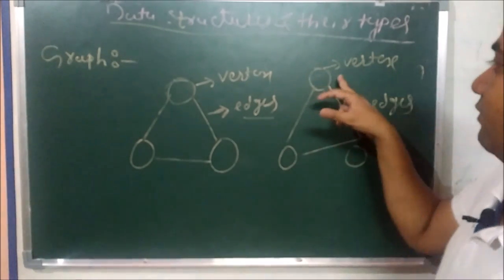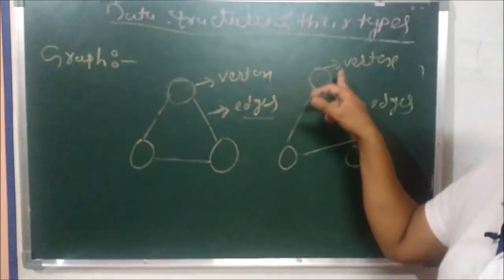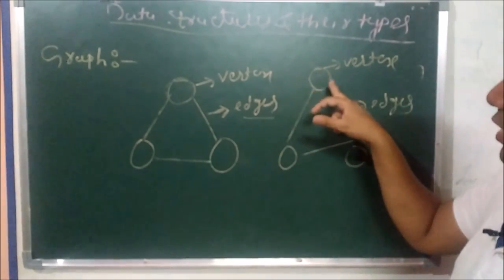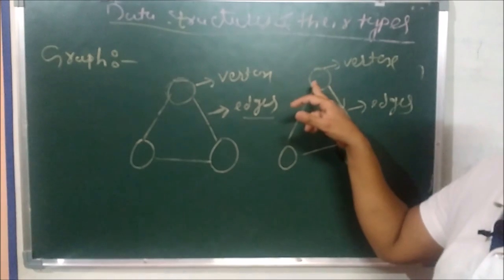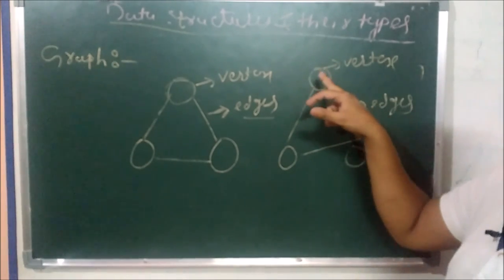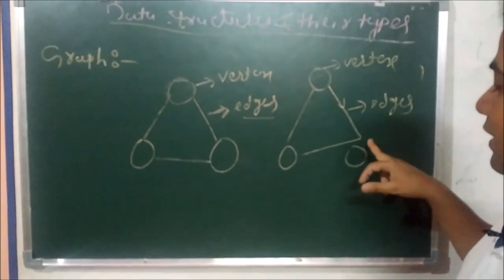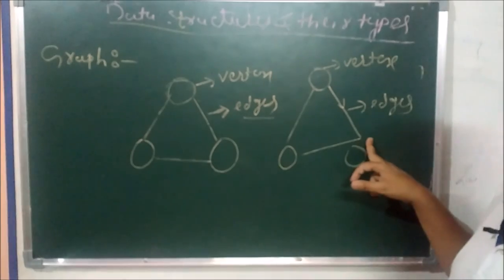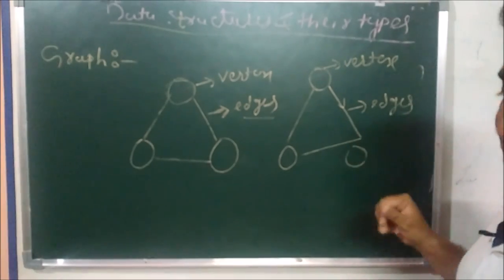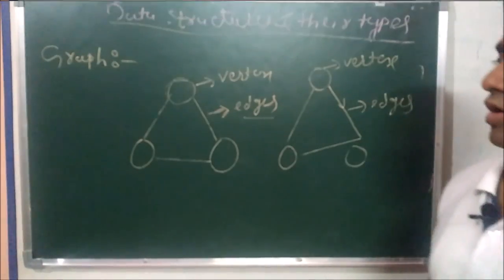Graph has different types: directed and undirected. If edges have a direction, it is a directed graph; if edges have no direction, it is an undirected graph. The main node is a vertex and the distance between nodes is an edge. This is a graph.